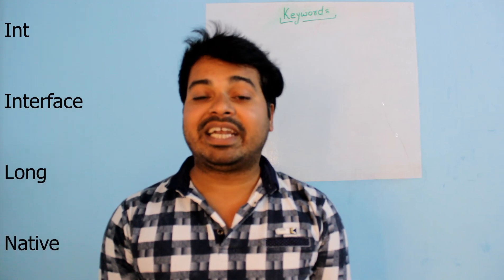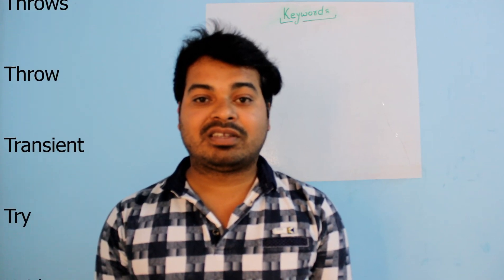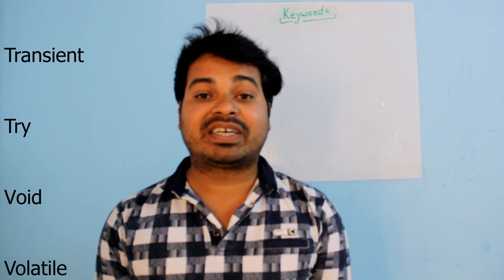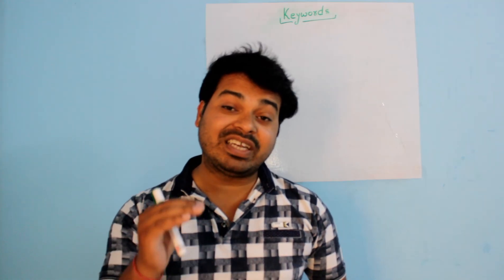Long, native, new, public, private, protected, package, return, short, static, strictfp, super, switch, synchronized, this, throws, throw, transient, try, while, volatile, and void. These are the 50 different keywords we have in Java.